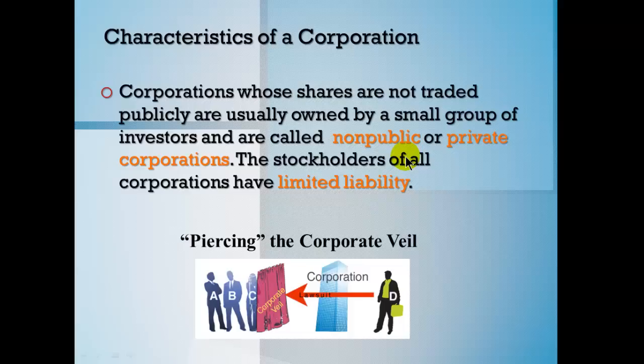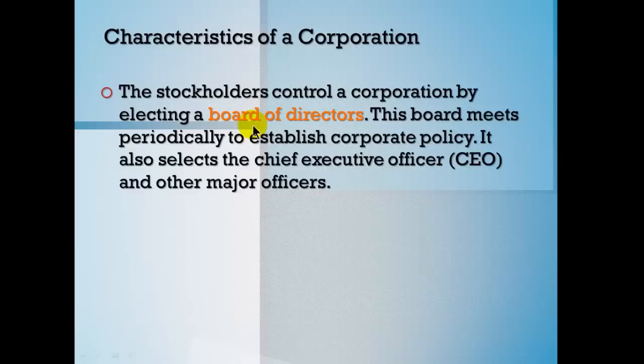Stockholders of a corporation have limited liability, which plays into the concept called the corporate veil. The veil stands between the corporation and those wanting to hold individual owners personally responsible — it limits the liability of the stockholder. Stockholders control the corporation by electing a board of directors. The board meets periodically to establish policy and to ensure that senior management is doing what they're supposed to do.